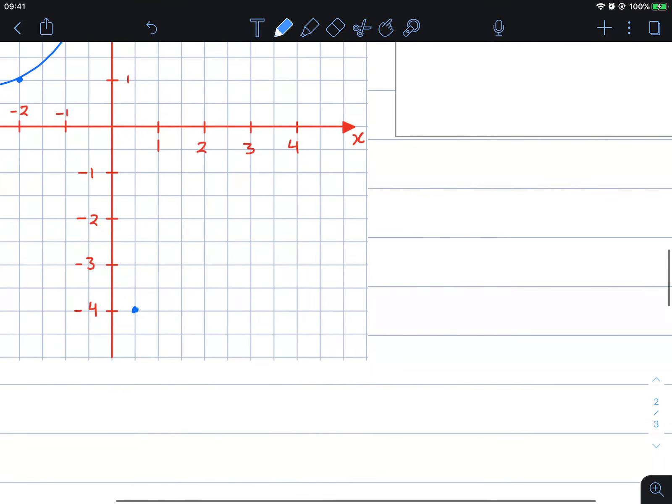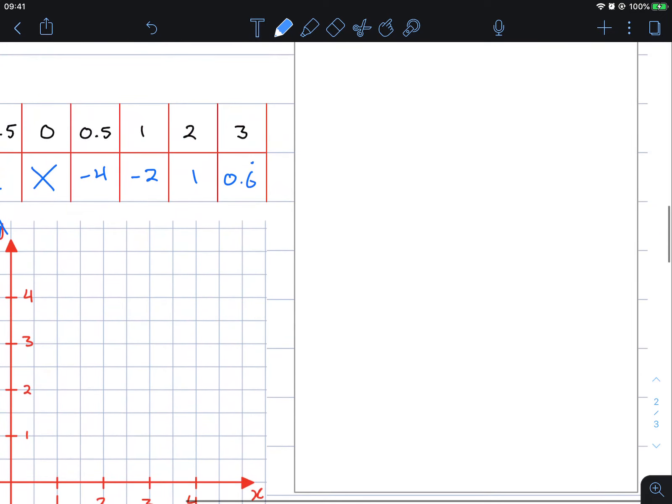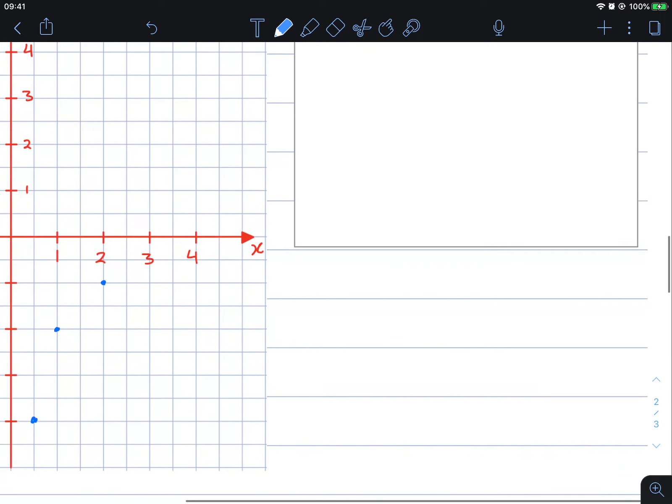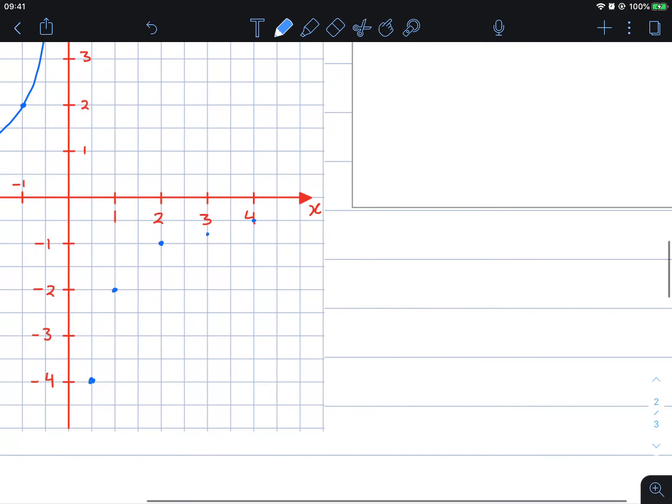3 negative, it should have been negative, sorry, negative 0.6. That will be half. So it should be somewhat like this.